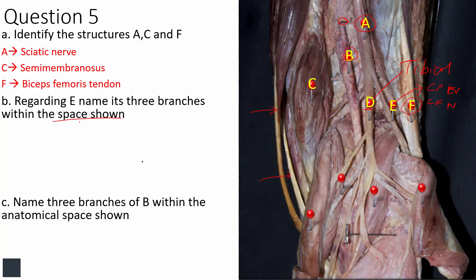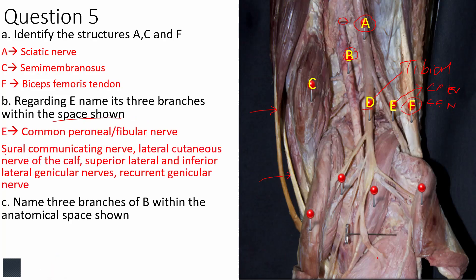If asked for branches of the common peroneal nerve within the popliteal fossa, do not say the deep and superficial peroneal nerves — those are not given within the popliteal fossa. The common peroneal nerve has five branches within the popliteal fossa: the sural communicating nerve, the lateral cutaneous nerve of the calf, the superior lateral genicular nerve, the inferior lateral genicular nerve, and the recurrent genicular nerve.